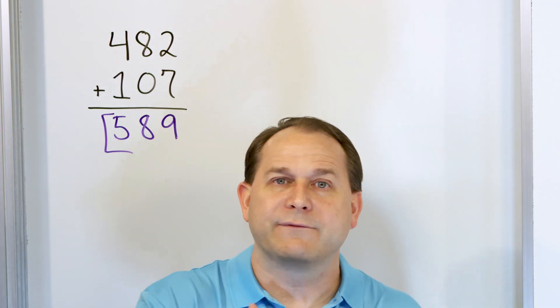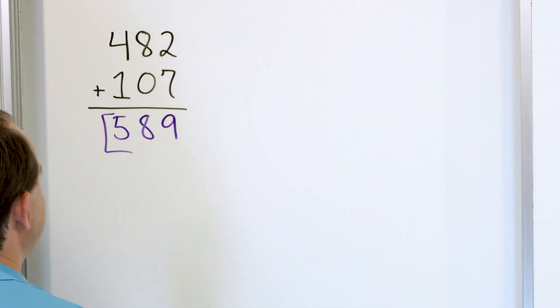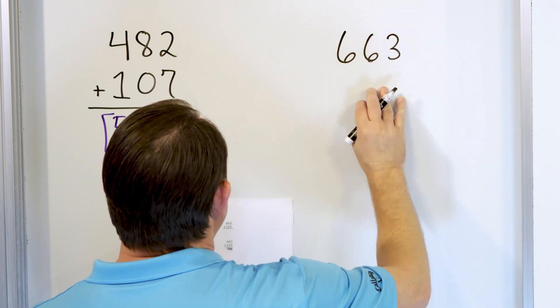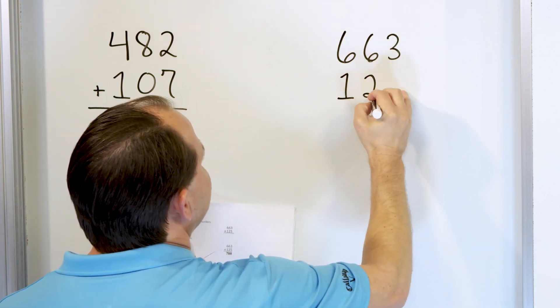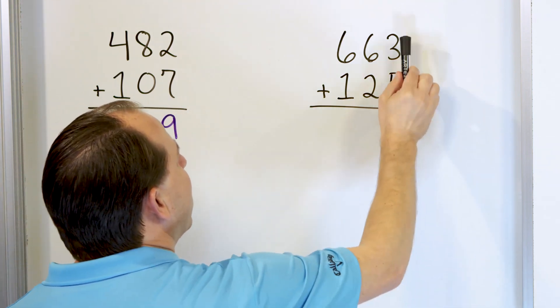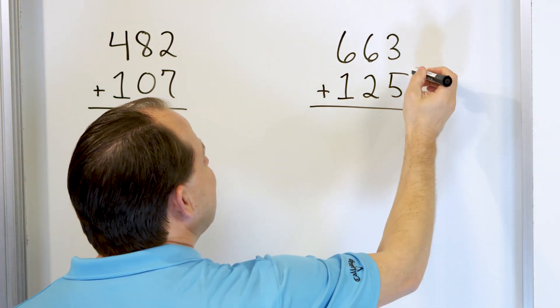Now as we get further along, you have to carry a digit, we'll do it the same way we've been doing it in the past. Let's go off to our next problem. Let's take a look at 663, and we'll add to that 125. We start over in the right column, we start with 5, we go up 3 more, that's 6, 7, 8.